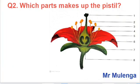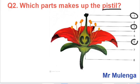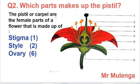Question two asks: which parts make up the pistil? The pistils, also called carpels, are the female parts of the flower. The female parts of the flower are made up of the stigma (part one), the style (part three), and the ovary (part six). The stigma, the style, and the ovary together make up the female parts of the flower that we call the pistil or carpels.